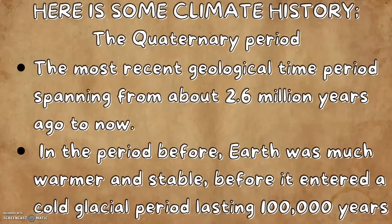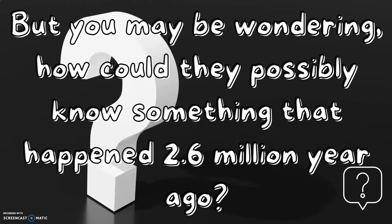Here is some climate change history. The Quaternary Period is the most recent geological time period, spanning from about 2.6 million years ago to right now. Earth was much warmer and stable before it entered a cold glacial period lasting 100,000 years. But you may be wondering, how could they possibly know something that happened 2.6 million years ago?